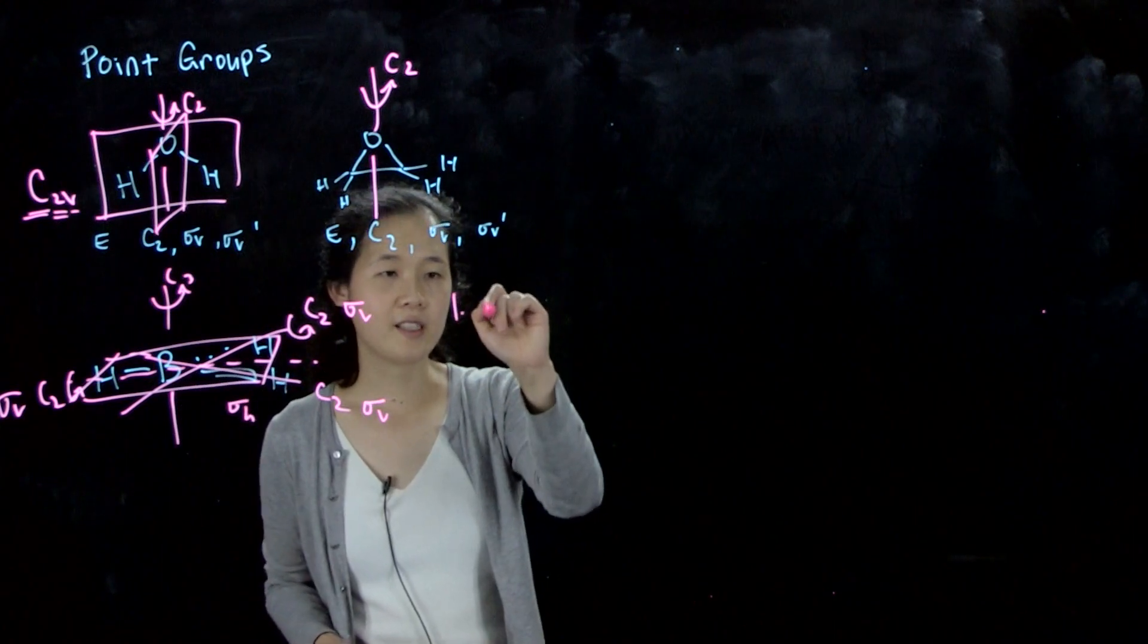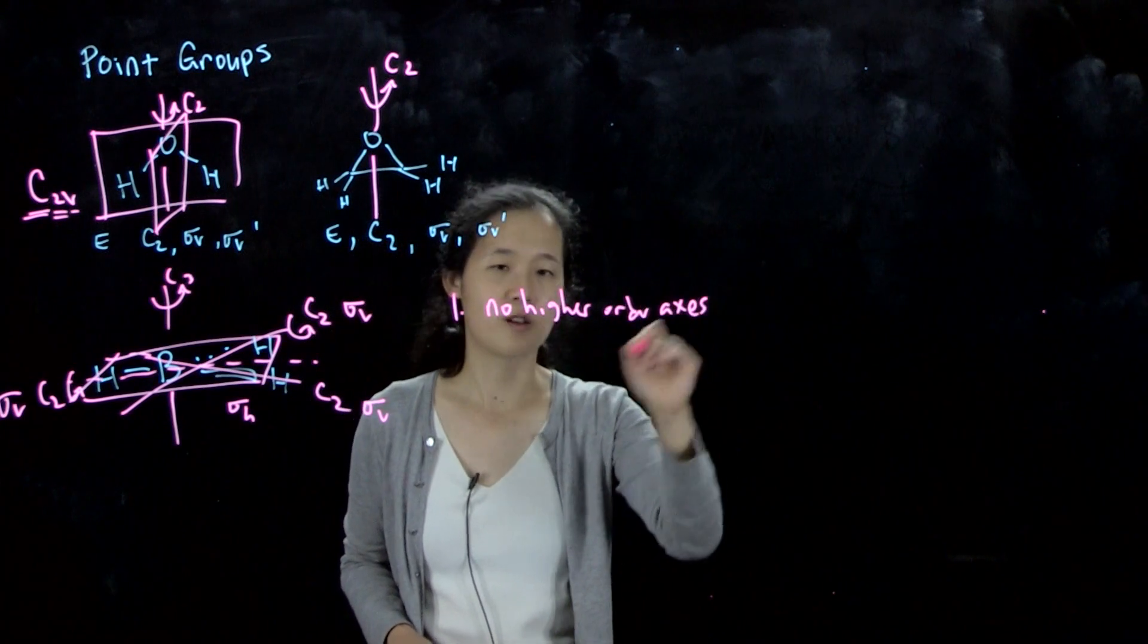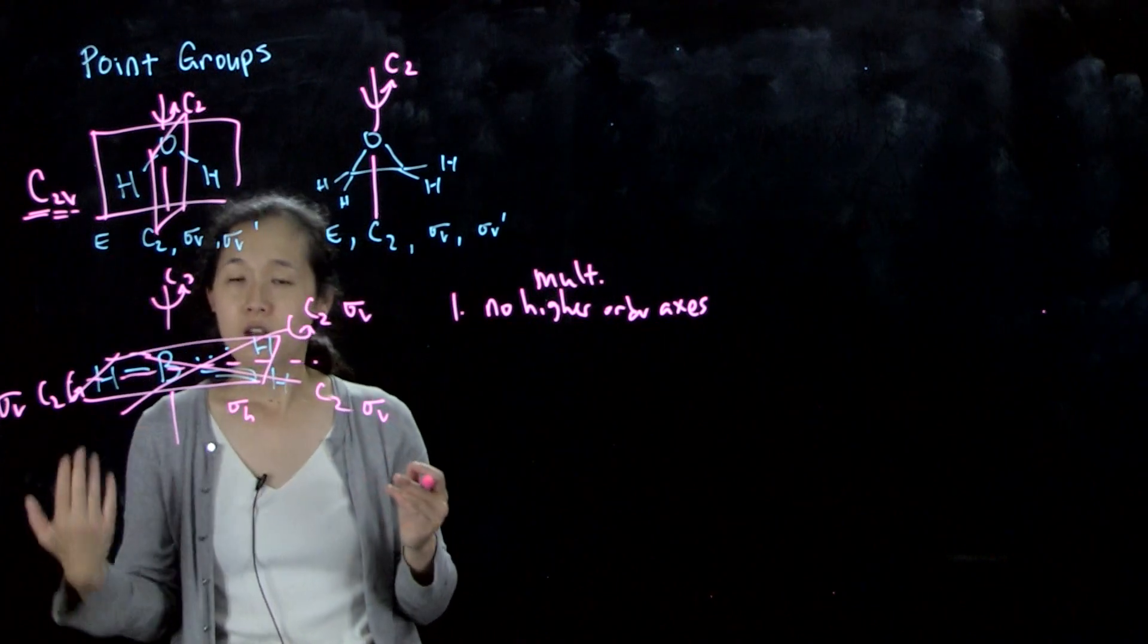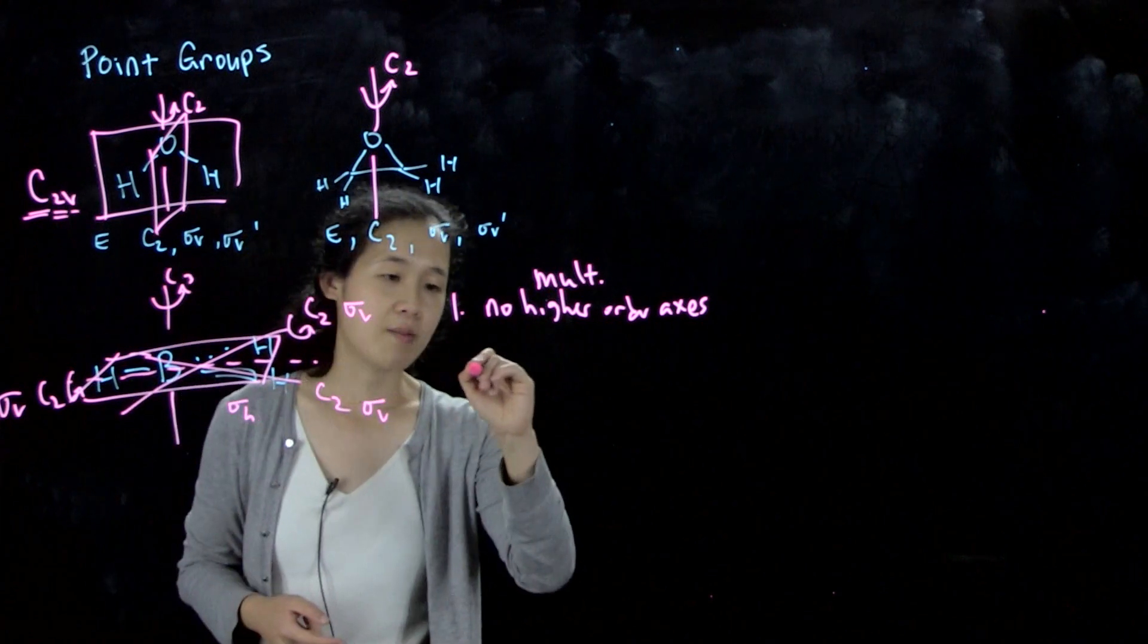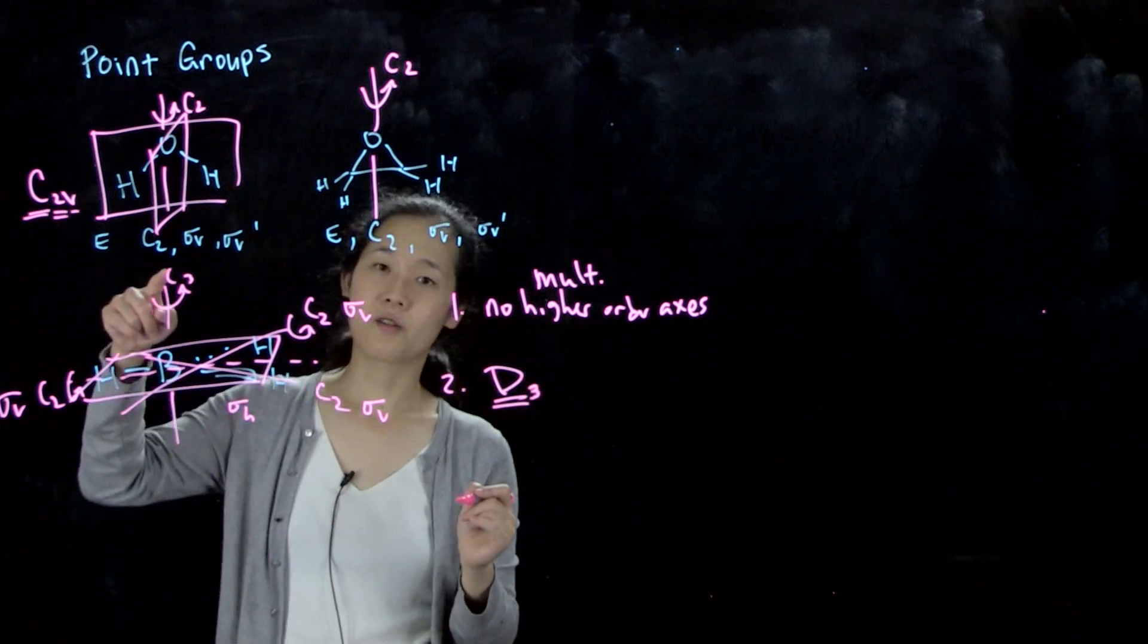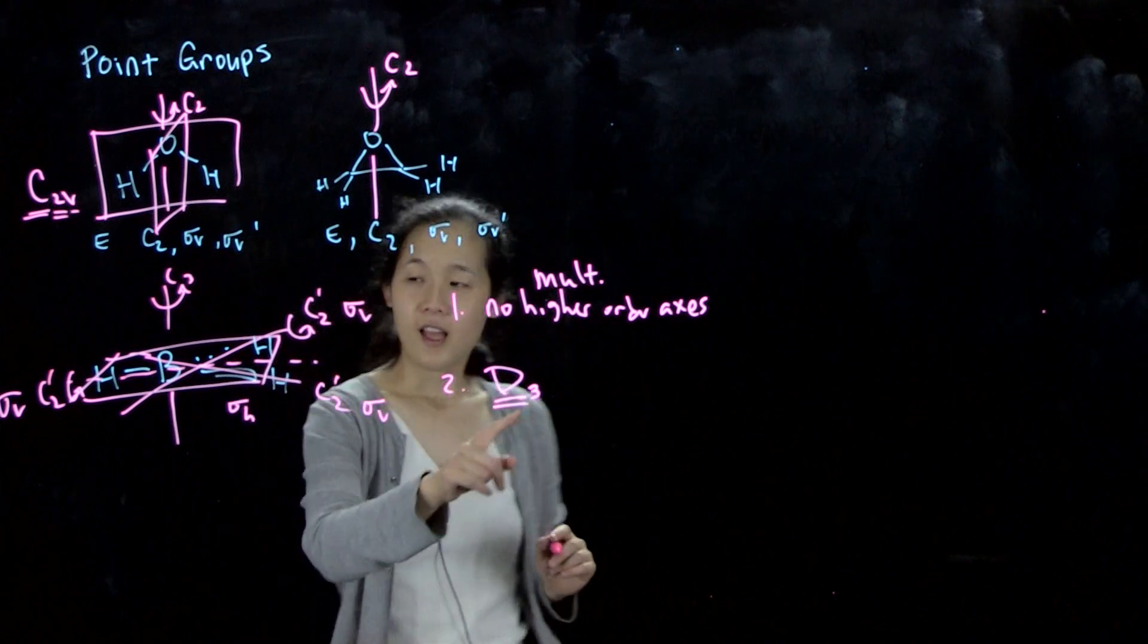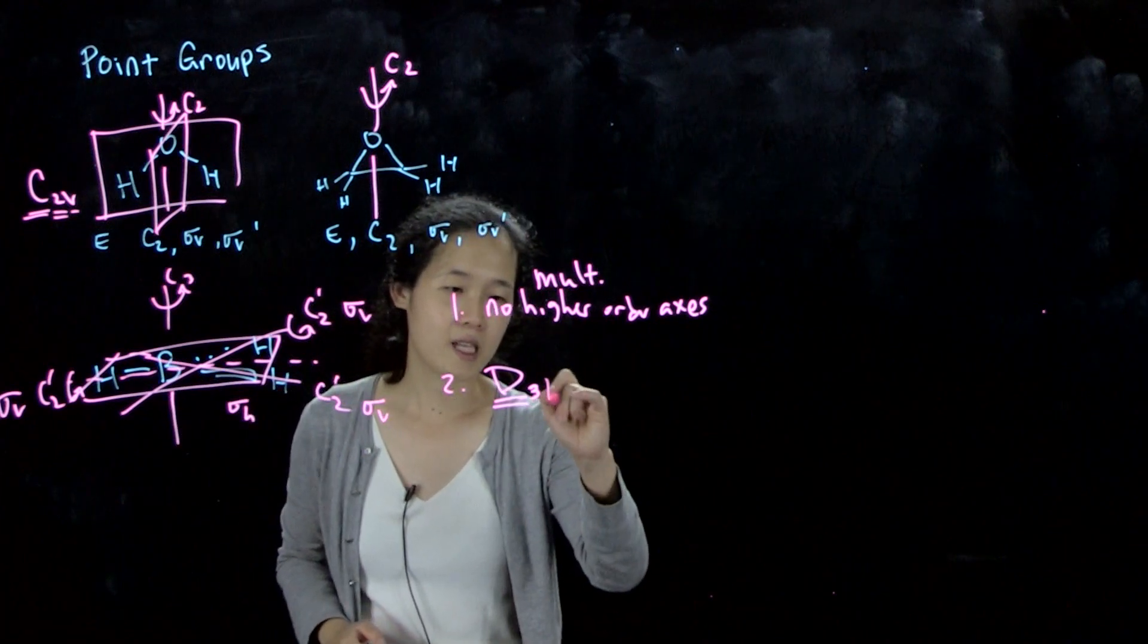So if we go through our flowchart. No multiple high order axes. We have the C3, and because we have this C3, we go to the second part of the flowchart. Do we have the perpendicular C2s? We do. So because of this, this is now in the D point group. So D3. Again, 3 for this central primary axis, D meaning that we have perpendicular C2s. I guess we can call these C2 primes. And then because we also have this horizontal mirror plane that's perpendicular to the C3, this is D3H.